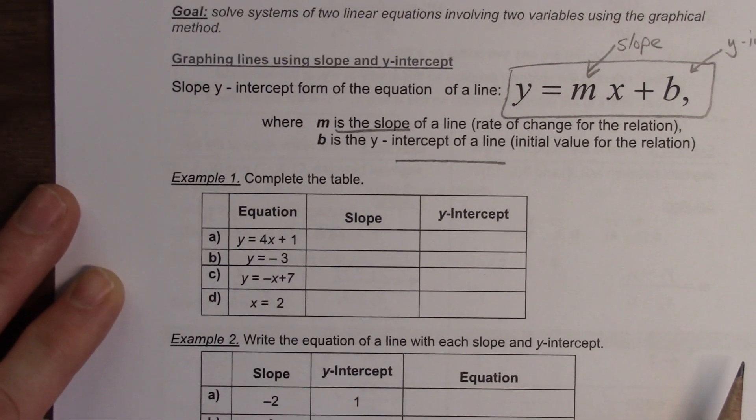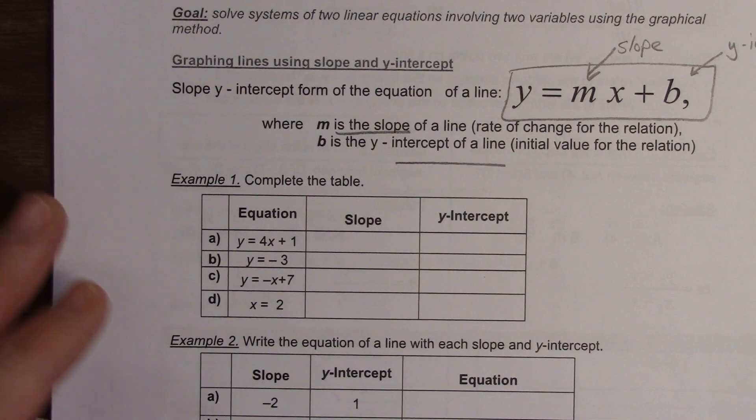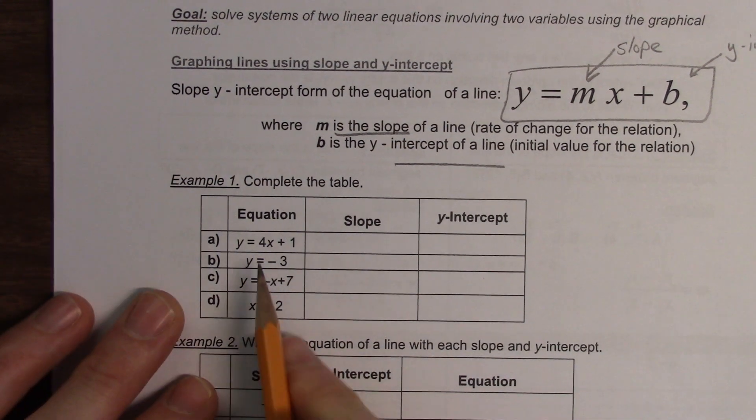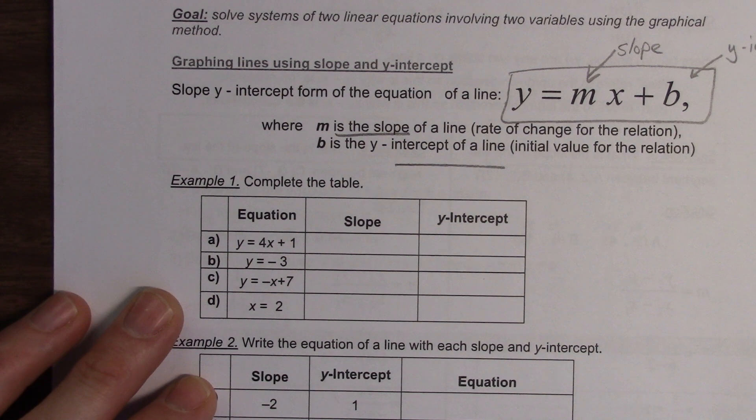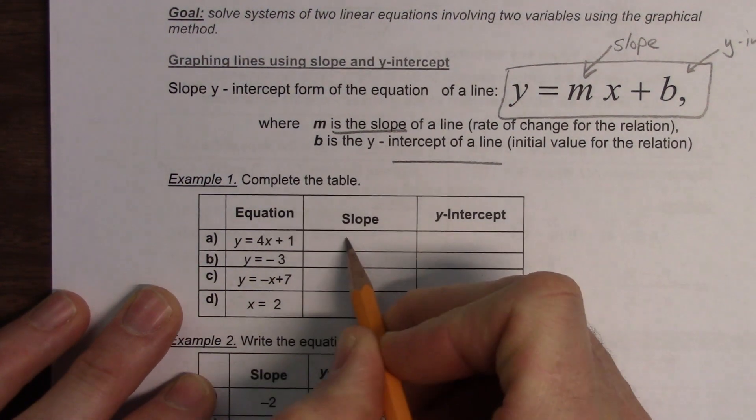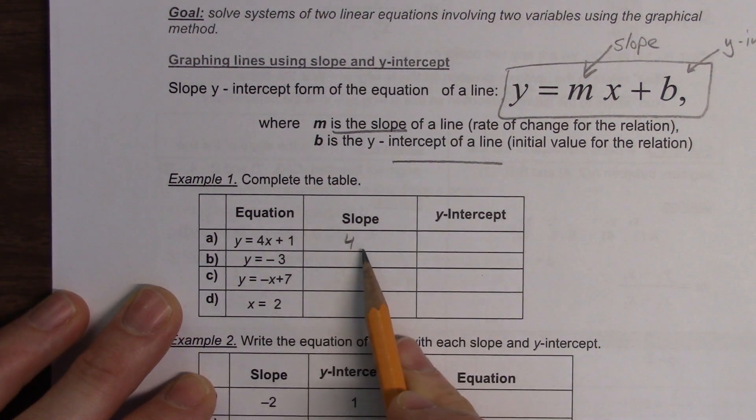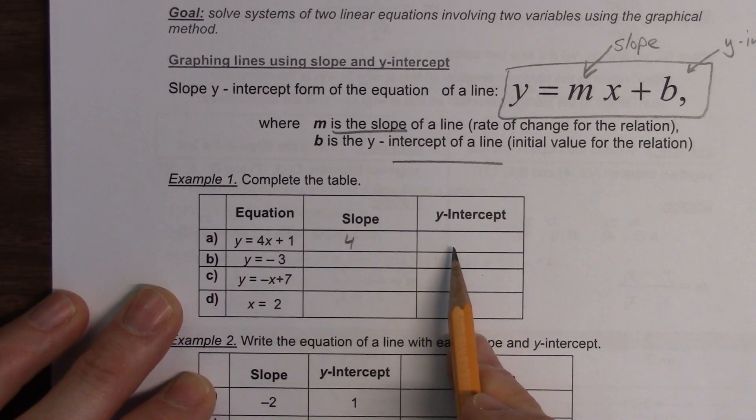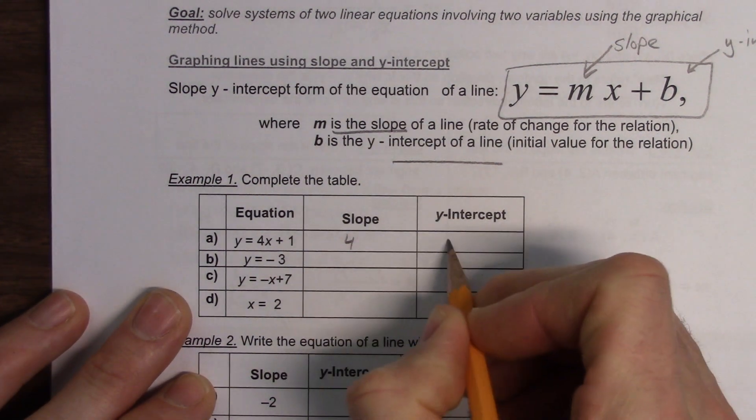Okay, it says example 1. Complete the table. So the slope, we're going to get some volunteers here. RC, what's the slope here? And would I put x for the slope? No, just 4. And the y-intercept, RC? 1. Excellent.